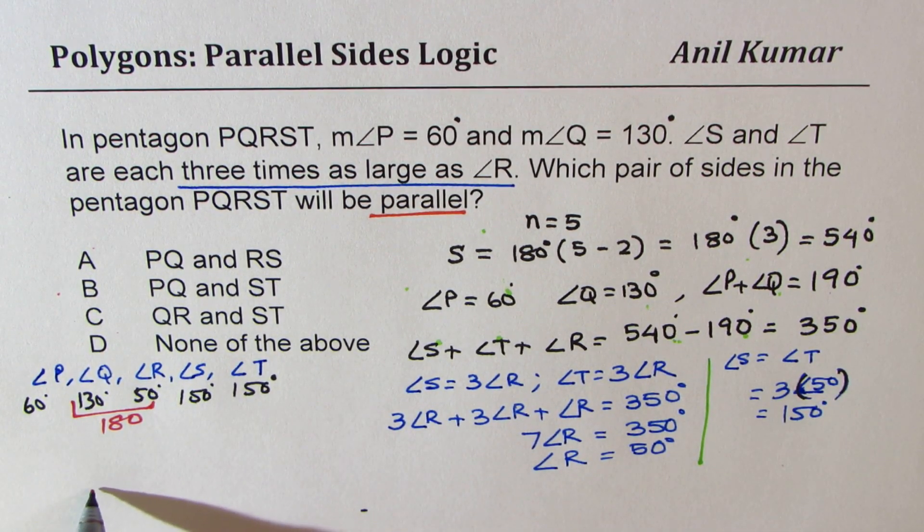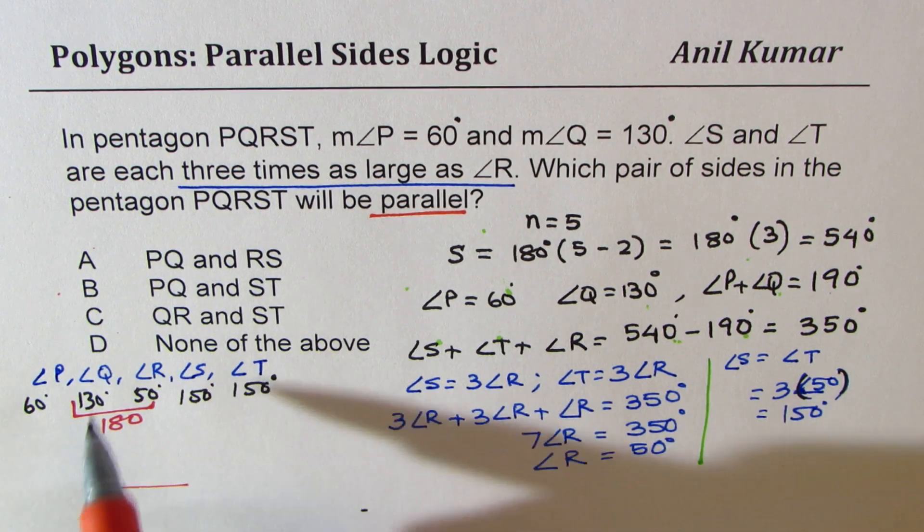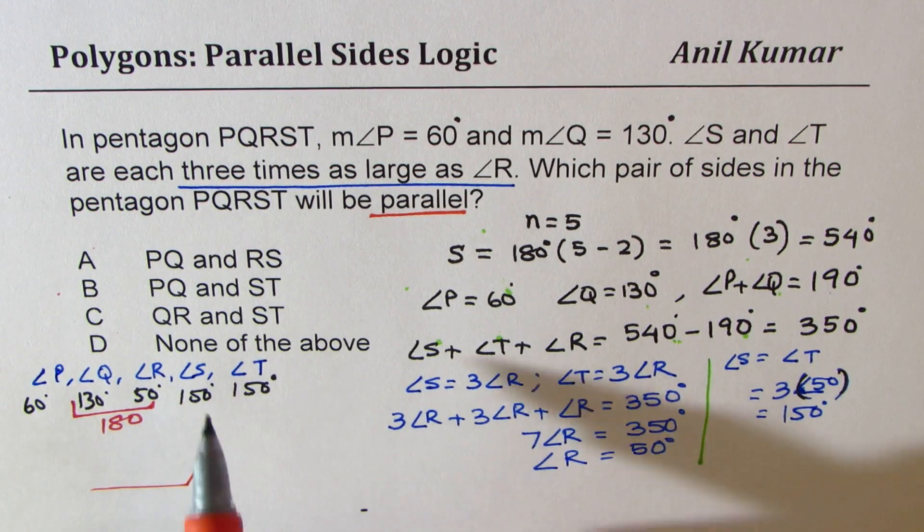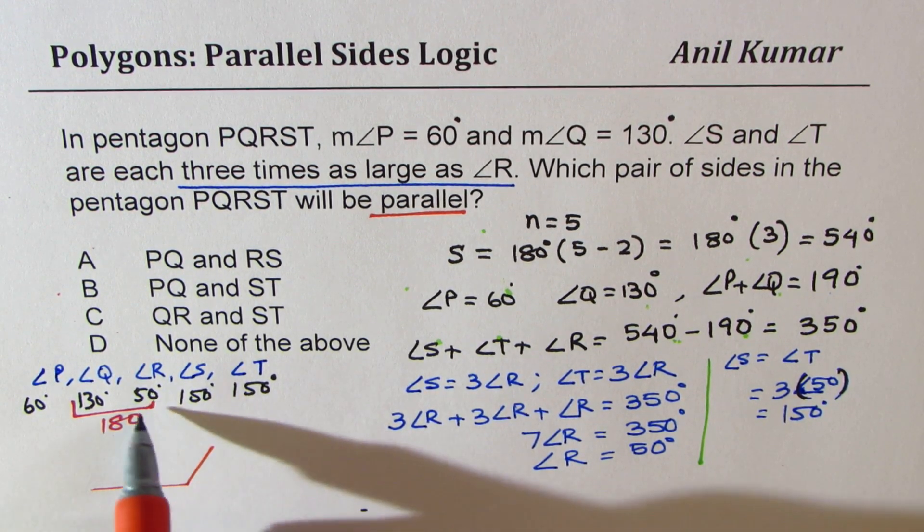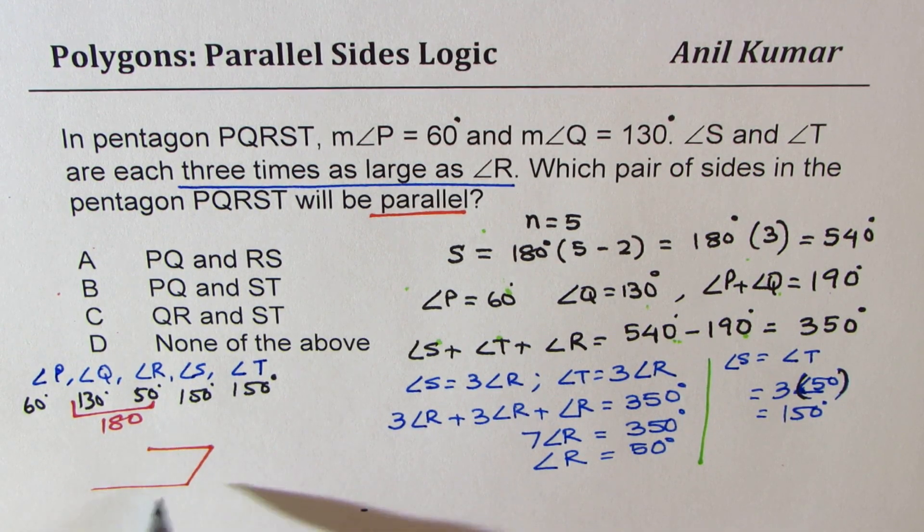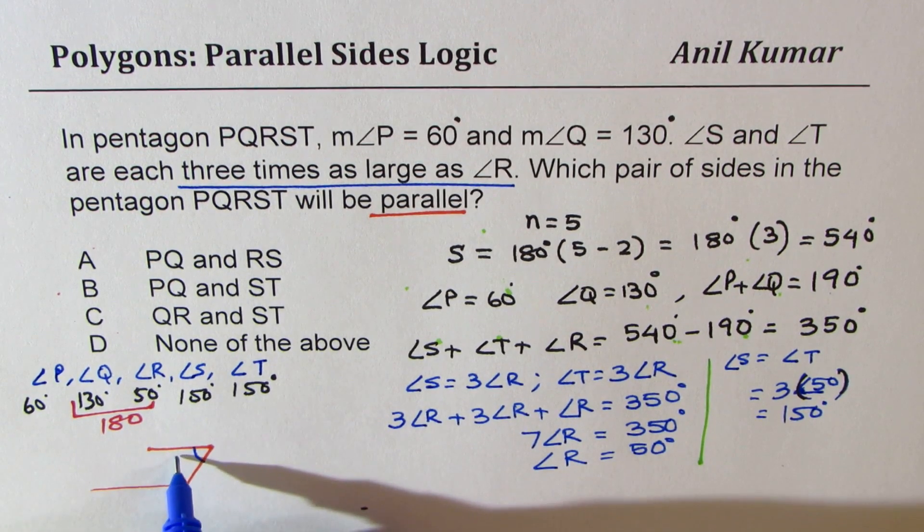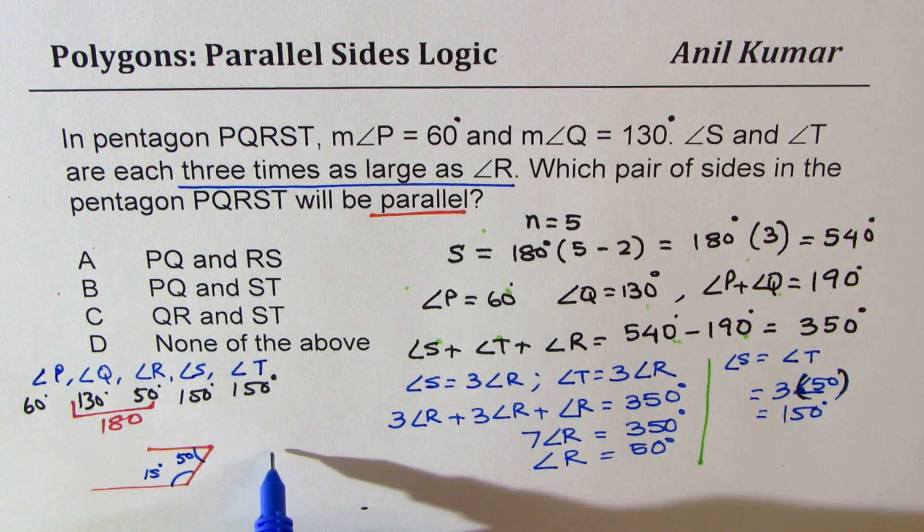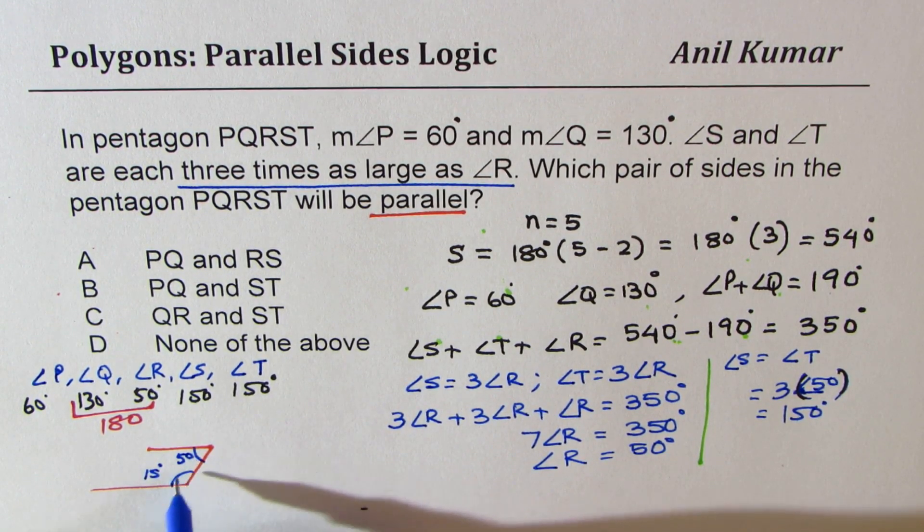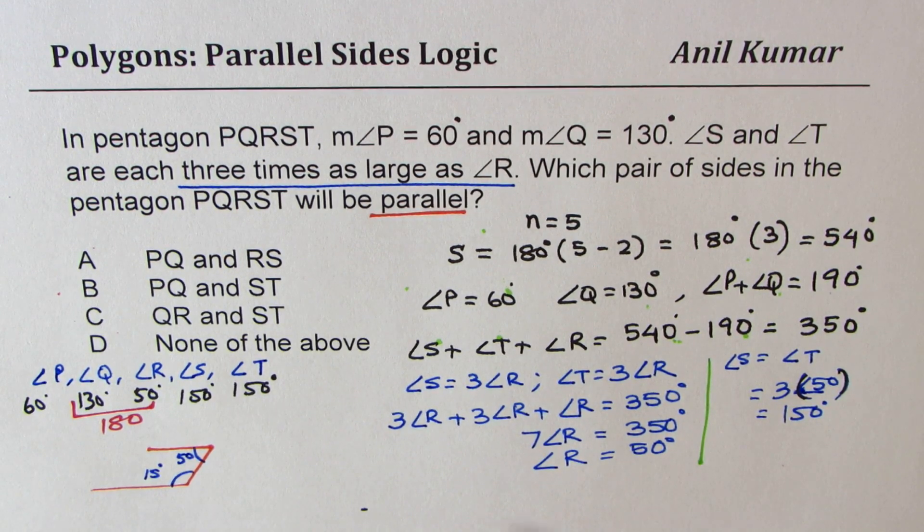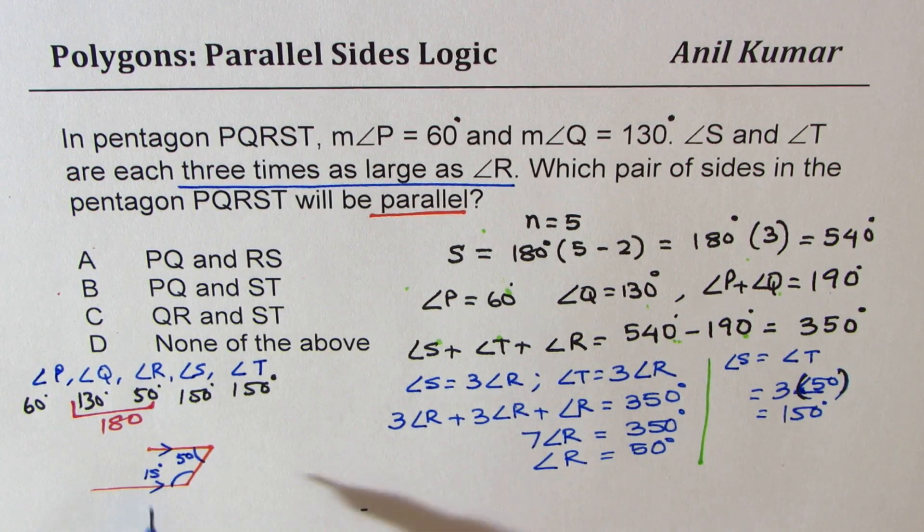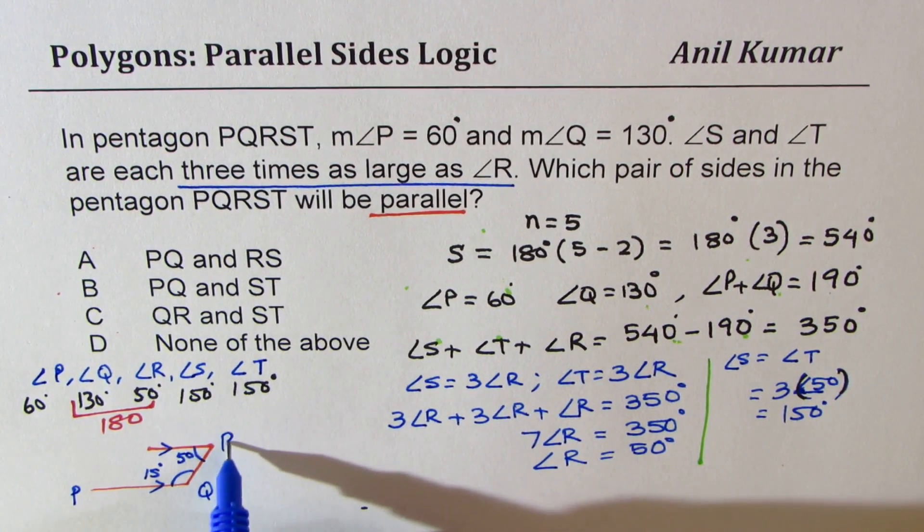So that really means that the polygon is kind of like this. Let's say this is P for us. Then Q. And since this R makes it 180, it has to be parallel to this side. So 50 and 130, it forms a C shape. They add to 180 degrees. Therefore, these two lines should be parallel. So we are saying this is P, this is Q, this is R.